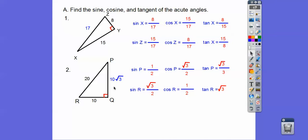And then the sine of r is opposite over hypotenuse. The cosine is adjacent over hypotenuse, and the tangent is opposite over adjacent. So you should get those ratios right there.